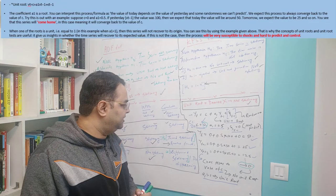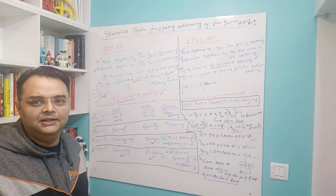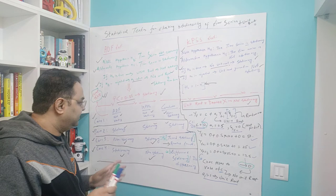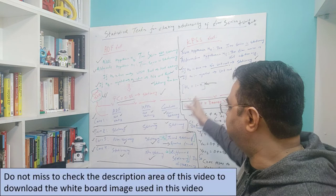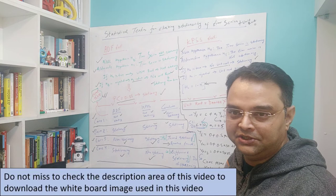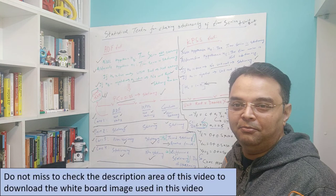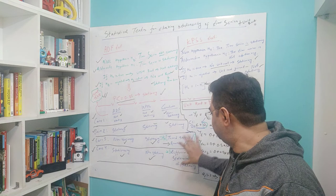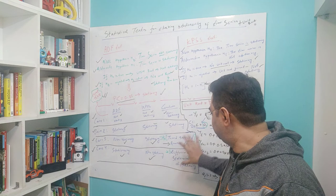I hope this was helpful in getting some mathematical intuition behind the unit root concept used in ADF and KPSS testing. That's all about this video. You can see the image of the whiteboard in the description. Do like and subscribe, and if you have any questions, comment below. In the next video we'll be looking at differencing of time series and the Box-Cox transformation, especially log transformation. Thank you so much!